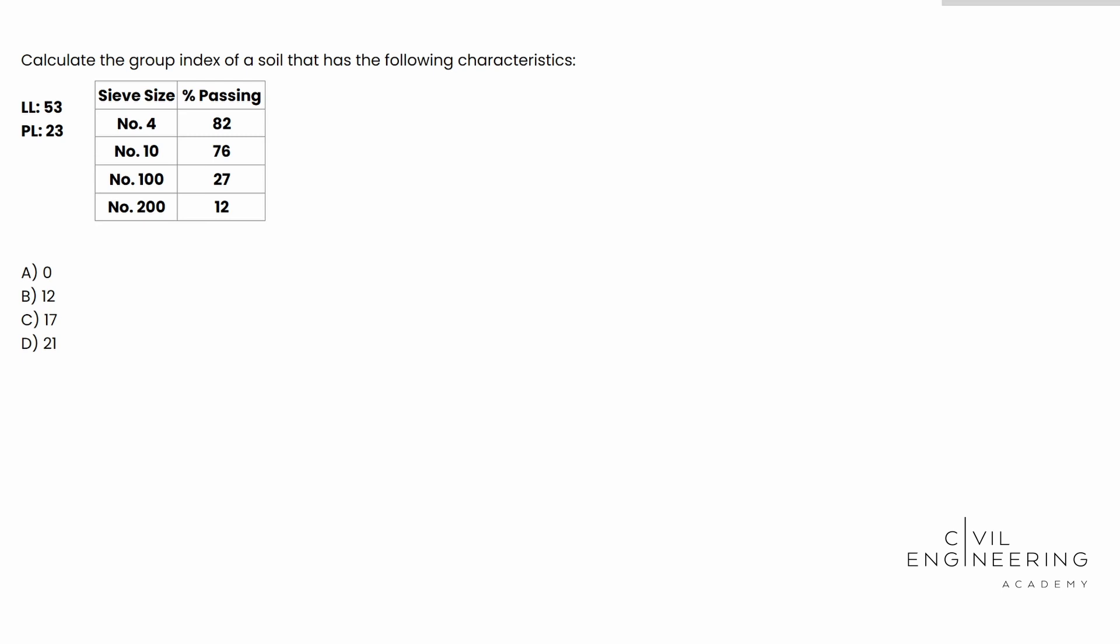In particular, we're going to be talking about some soil properties. The question says, calculate the group index of a soil that has the following characteristics. LL, liquid limit, is 53. PL, plastic limit, is 23. And then we have the sieve size, number 4, number 10, number 100, and number 200, and the percent passing. So basically, they sent a sample of soil through a sieve analysis, and this is what they came up with. And we are tasked with determining the group index.